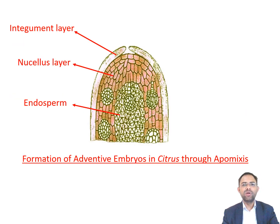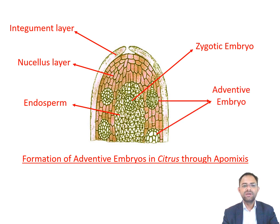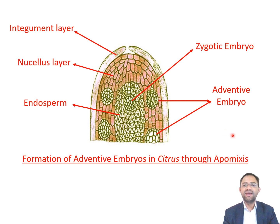Taking the example of citrus, the formation of adventive embryos takes place through apomixis. In citrus, besides the zygotic embryo, the formation of extra embryos takes place due to sporophytic budding. One or more sporophytic cells from either the nucellus or integuments undergo stages of embryogeny and develop into mature embryos. These extra embryos are called adventive embryos. The central egg cell fuses with the male gamete to form the zygotic embryo, while additional embryos arise from the nucellus and integument layers.